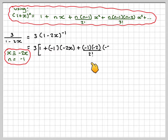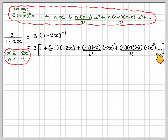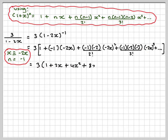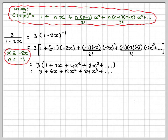Continuing: 3[1 + (-1)(-2x) + ((-1)(-2))/2! · (-2x)² + ((-1)(-2)(-3))/3! · (-2x)³ + ...]. This simplifies to 3[1 + 2x + 4x² + 8x³]. Multiplying through by 3 gives 3 + 6x + 12x² + 24x³. We stop here since we only need the cubic expansion.